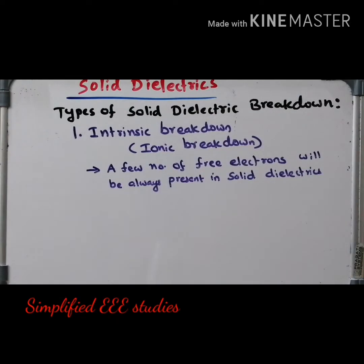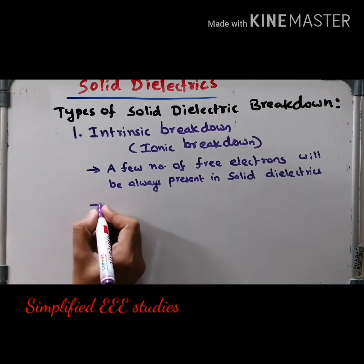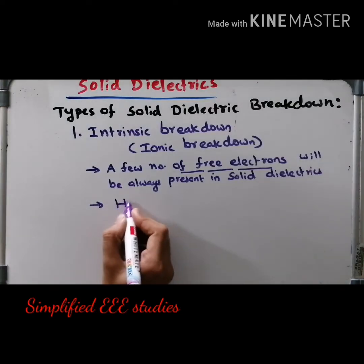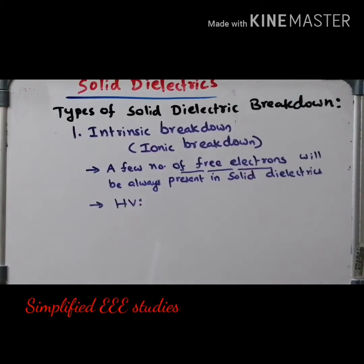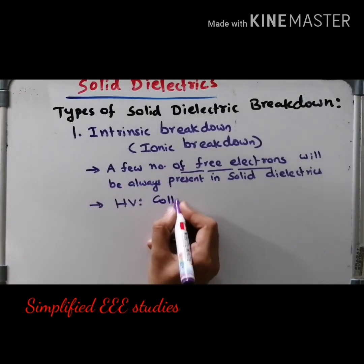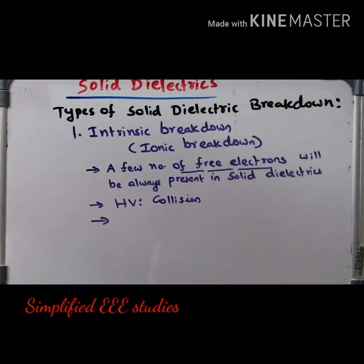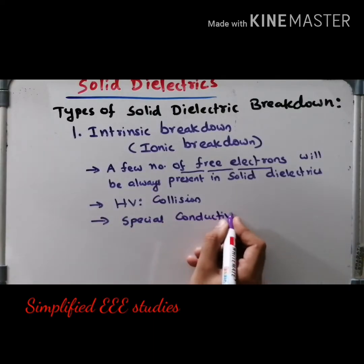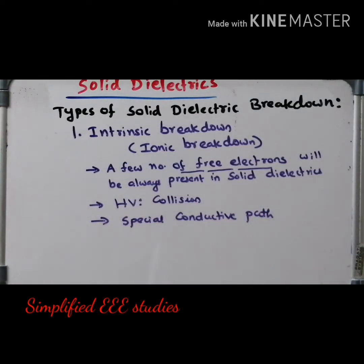Whenever you are applying high voltage, those free electrons will be providing a special conductive path. Collision of free electrons will be taking place, and because of that, it provides a special conductive path. This results in dielectric breakdown. If solid dielectric materials become conductive, their insulating property has been degraded — that means dielectric breakdown has taken place. This type of breakdown is generally called intrinsic breakdown or ionic breakdown.